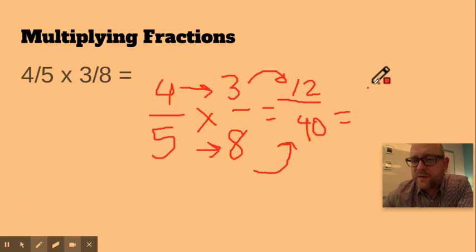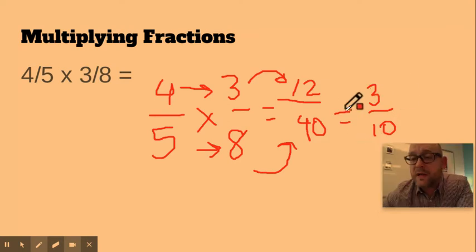So 12 is four times three. 40 is four times 10. Three tenths is actually as low as I can go. That is simplest form right there.